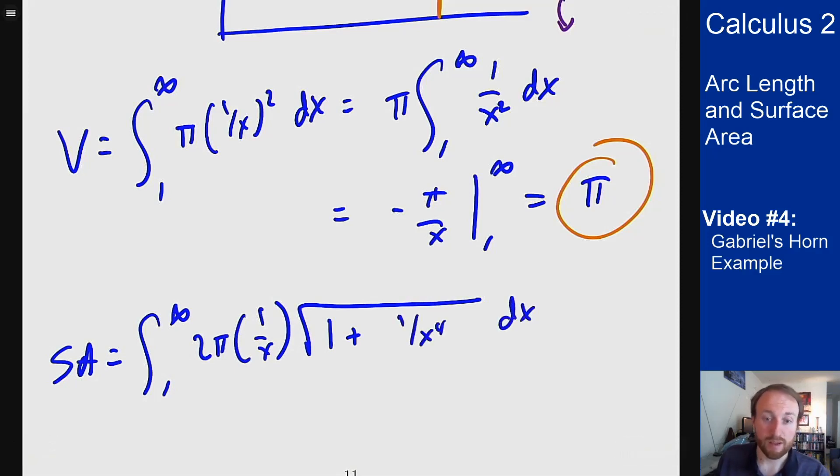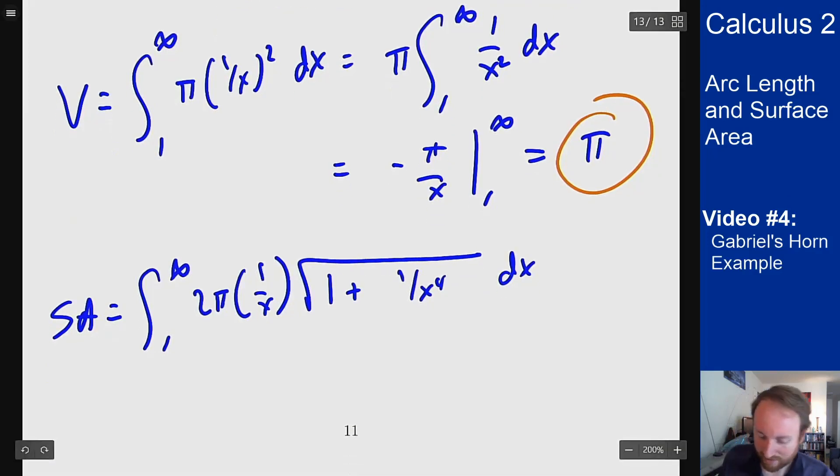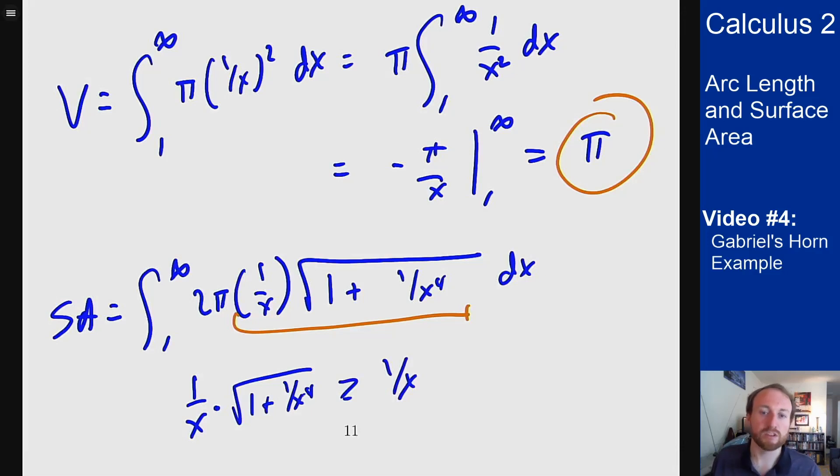This is the same one we had in the previous example. Now what do we notice here? Well, there's not really a nice way to integrate this function. However, I notice that this function, one over x times root one plus one over x to the fourth, is always bigger than one over x because that thing in the square root is always bigger than one, since it's one plus a positive number.